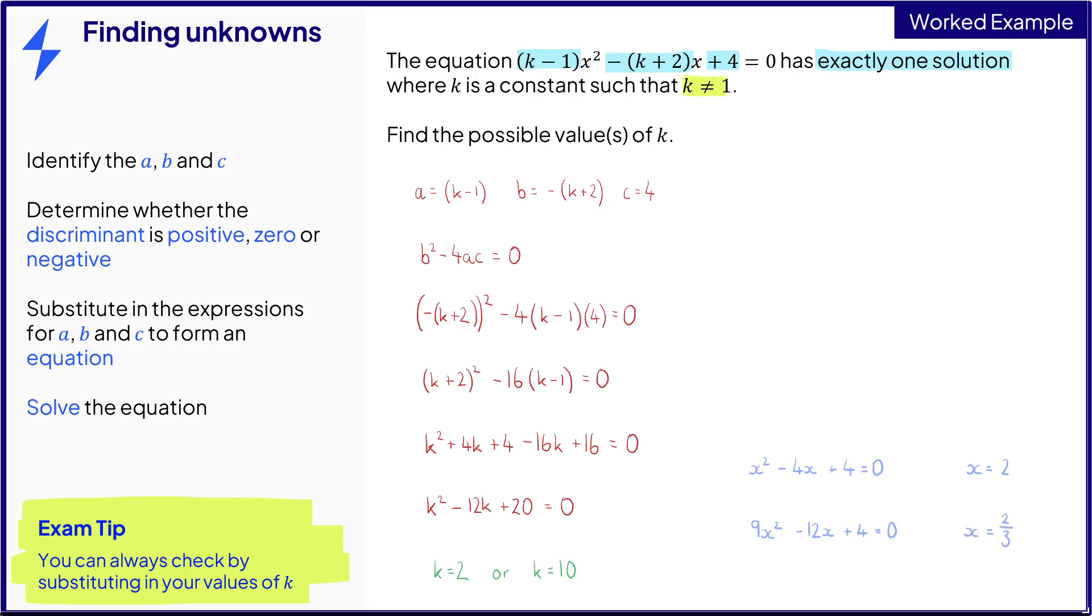You might have noticed in the question, it says k cannot equal one. Well, if k equals one, then the equation would just turn into a linear equation, which would have one solution. So therefore, by saying k cannot equal one, it eliminates this case.